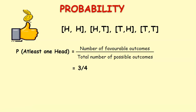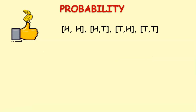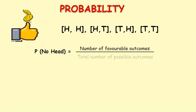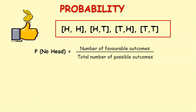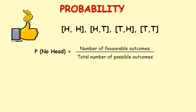Now let us see one more example of probability of getting no head at all. Here the favorable outcome is tail and tail, because this is the only outcome in which there is no head at all. So the number of favorable outcome is one by the total number of possible outcomes four. Therefore probability of no head is one by four.